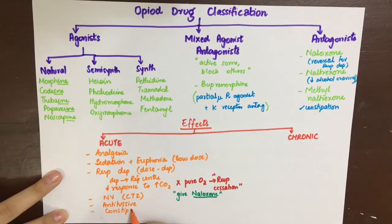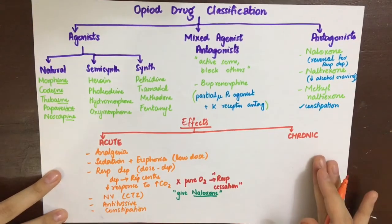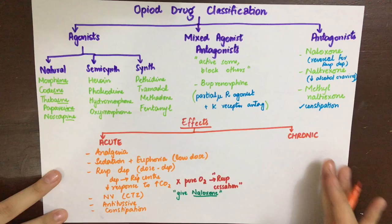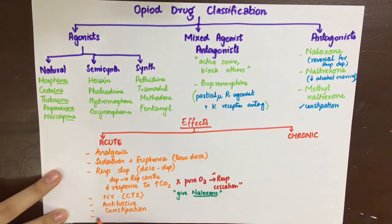The GI effects of opioids are due to decreased longitudinal muscle contractions and increased circular muscle contractions — that is, increased contraction of sphincters. This decreases peristalsis and causes constipation, but can be useful in diarrheal cases. Opioids should not be administered in biliary obstruction, as strong contraction at the sphincter of Oddi causes pressure buildup and potential rupturing.